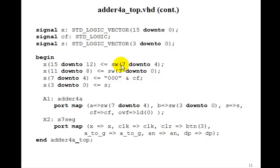So X15 downto 12 gets the leftmost 4 switches. X11 to 8 gets the rightmost 4 switches. 7 downto 4 gets the carry flag concatenated with 3 leading 0s. And then the sum is on the rightmost 7-segment display. And then you just port map the adder 4 and port map X7seg in the usual way.